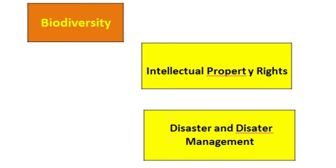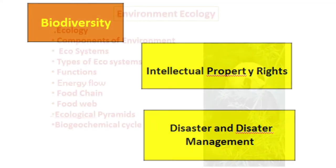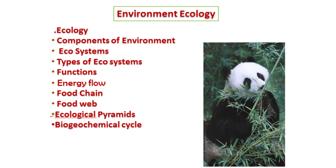You need to understand that Environment and Ecology is a combination of three different but interdisciplinary subjects: Biology, Ecology and Geography. We need to take the syllabus as the benchmark. The syllabus clearly mentions Environment and Ecology, Biodiversity and Climate Change. The detailed structure of topics includes Ecology, Components of Environment, Types of Ecosystem, Functions, Energy Flow, Food Chain, Food Web, Ecological Pyramids, and Bio-Geochemical Cycles.